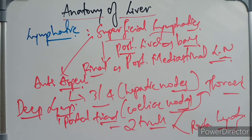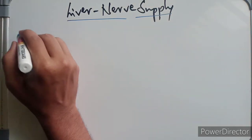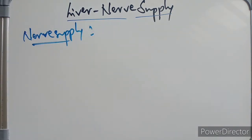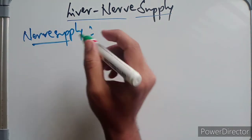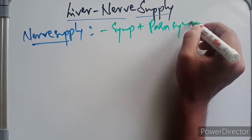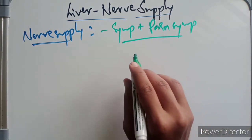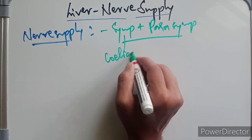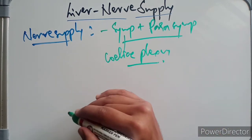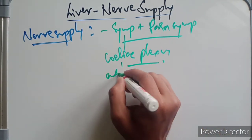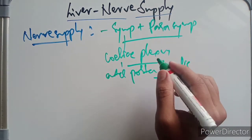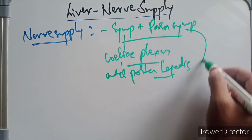Now let's discuss the nerve supply of the liver. The liver is supplied by both sympathetic and parasympathetic fibers. The sympathetic fibers are derived from the celiac plexus. They run along the vessels in the free margin of the lesser omentum and then enter the porta hepatis.